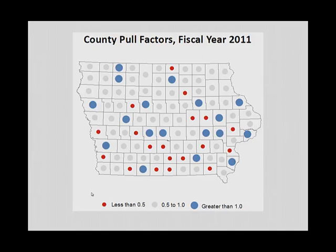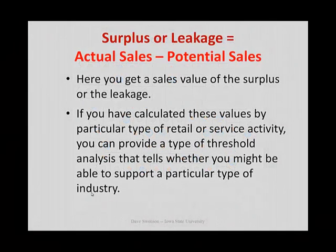Counting the counties with surpluses: there are 18 counties out of 99 — meaning 18% of Iowa's counties post trade surpluses at the county level.